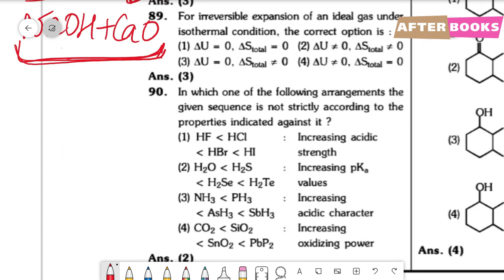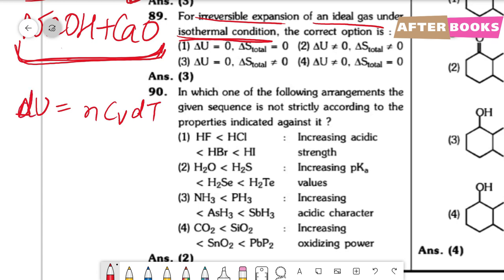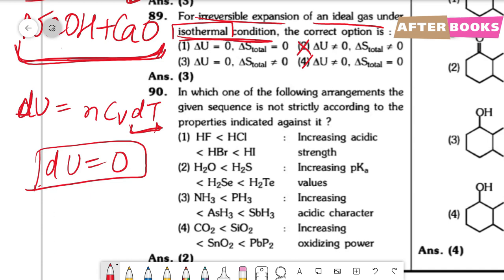Question number 89. For irreversible expansion of an ideal gas under isothermal conditions, find ΔU and ΔS_total. Under isothermal conditions, ΔU = nCvΔT = 0 (since ΔT = 0). For an irreversible process, total entropy ΔS_total is non-zero (unlike reversible where ΔS_total = 0). So ΔU = 0 and ΔS_total ≠ 0. Correct option is option 3.